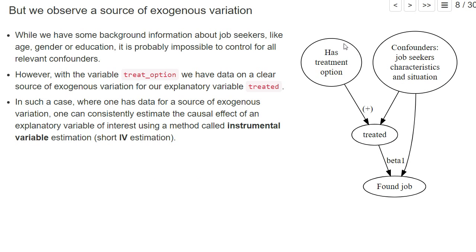However, what is very nice in our setting still, is that we have a clear source of exogenous variation of our endogenous variable treated. Whether the subject has the option to get intensive counseling was randomized, and let's assume for the moment it was perfectly randomized independent of everything else.